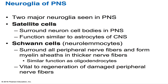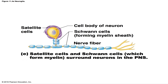In the PNS, the two major neuroglia are satellite cells and Schwann cells. Satellite cells surround neuron cell bodies in the PNS and function similarly to astrocytes of the CNS. Schwann cells (also called neuromyocytes) surround all peripheral nerve fibers and form the myelin sheath around thicker fibers — analogous to oligodendrocytes in the CNS. Schwann cells are also vital to the regeneration of damaged peripheral nerve fibers.